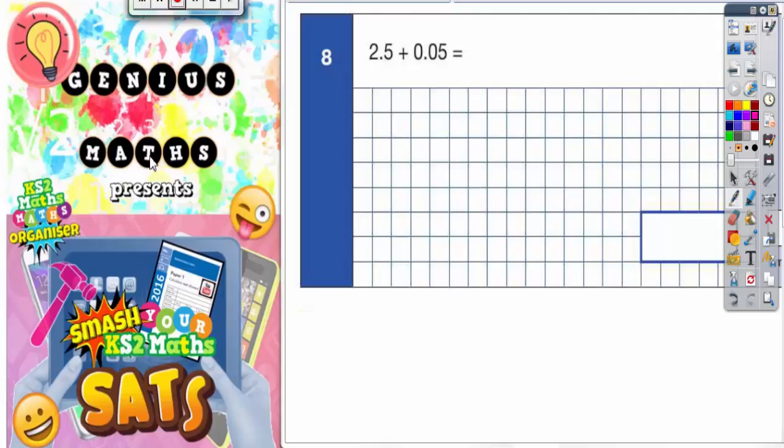Question 8: 2.5 add 0.05. Well, the first thing to notice is that this number's got one digit after the point and this one's got two digits after the point.